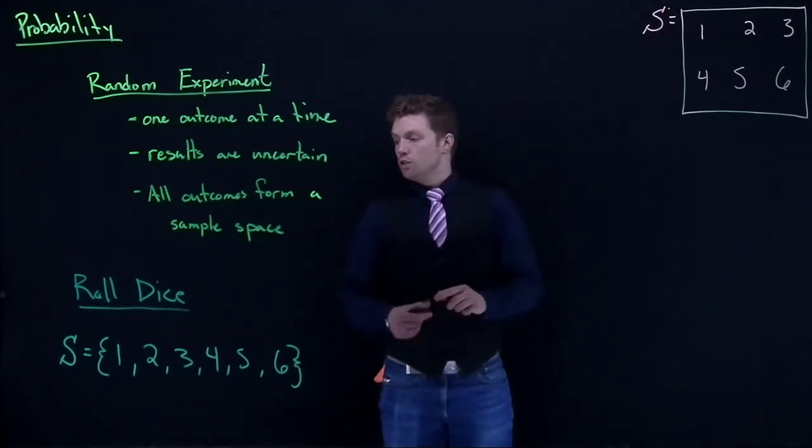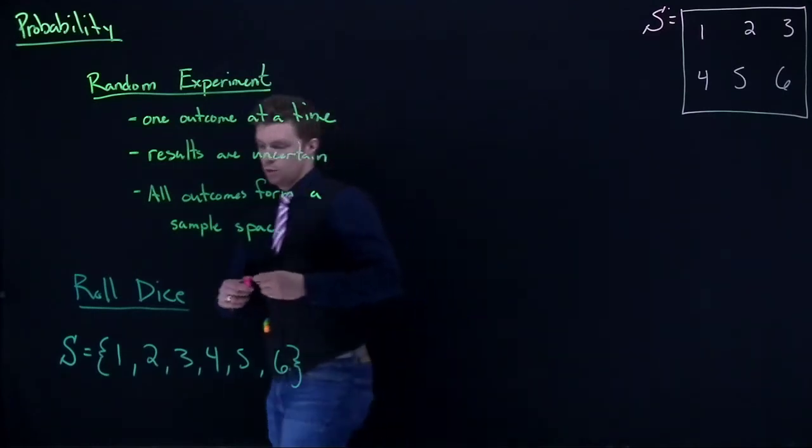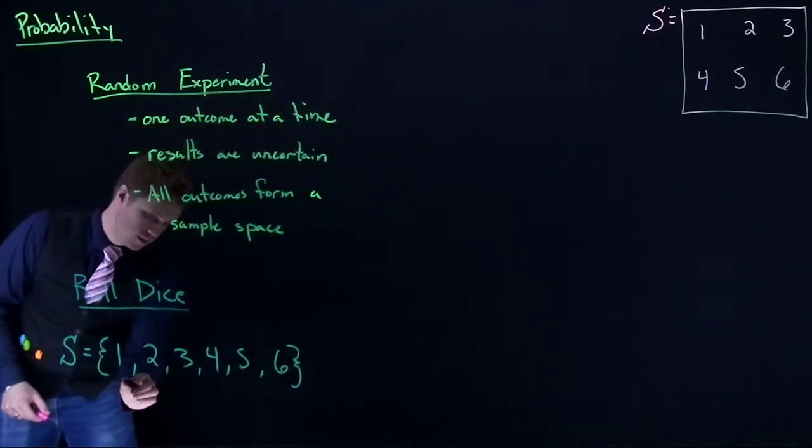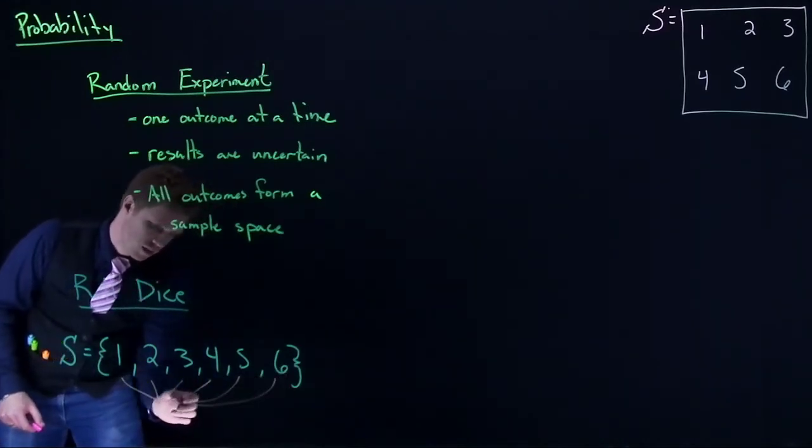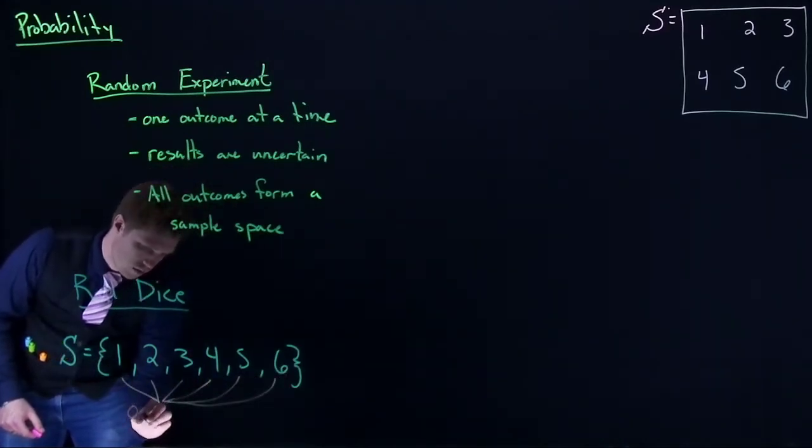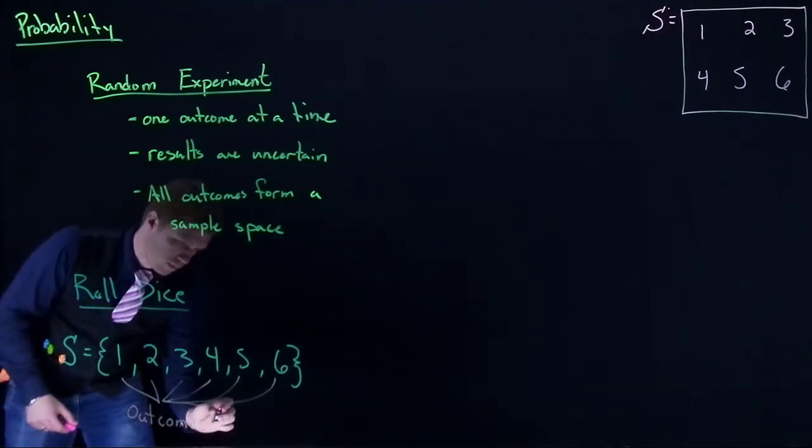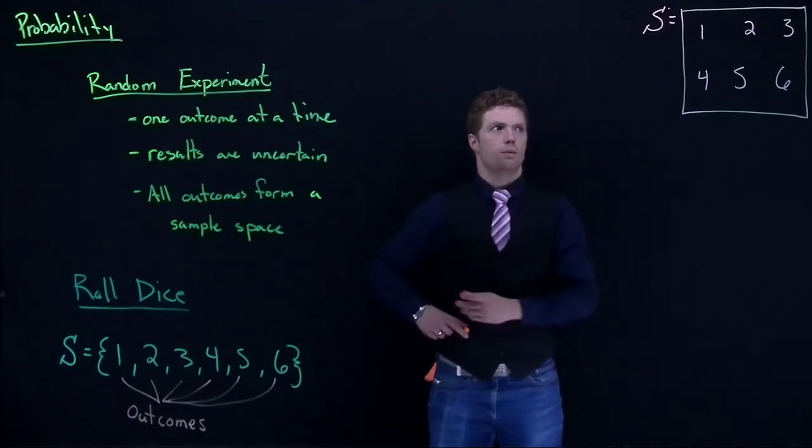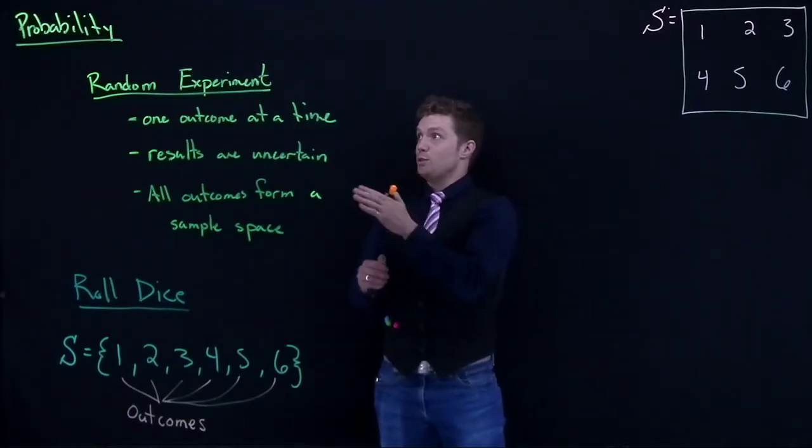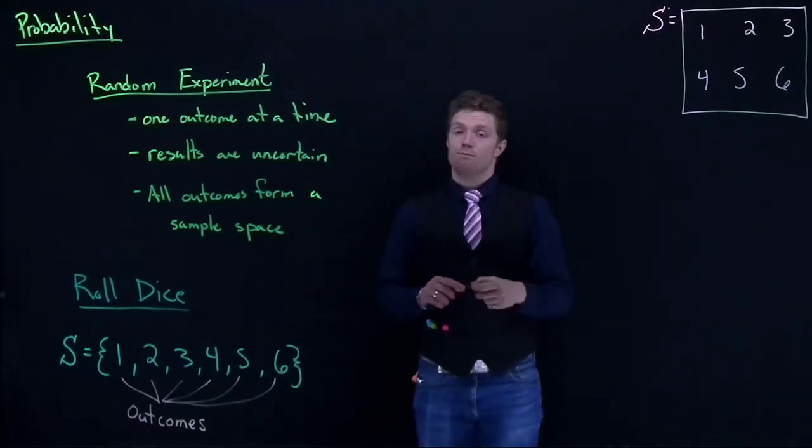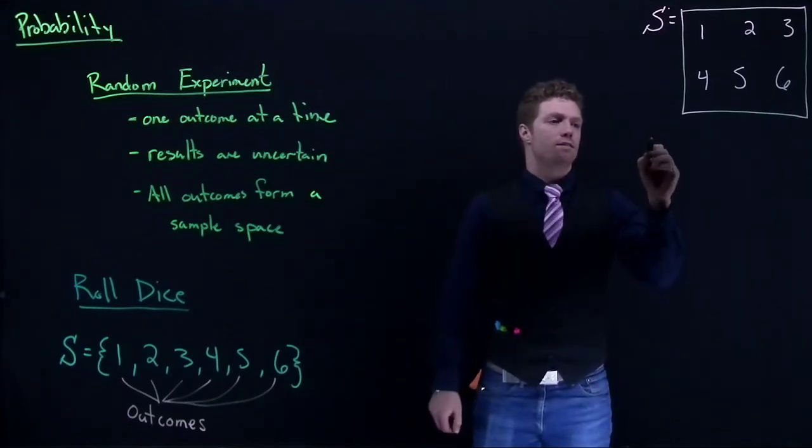We now know that we have a sample space, and a sample space is defined by its outcomes. We've got our sample space and our outcomes. We're getting really close to actually being able to talk about probability now. The next thing that we need to talk about is what's called an event.